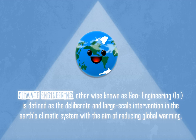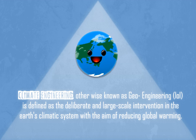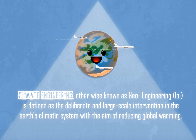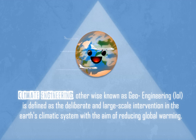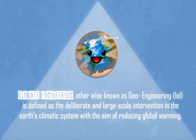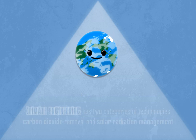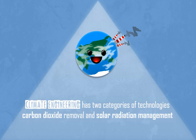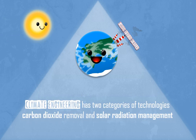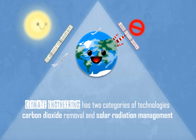Climate engineering, otherwise known as geoengineering, is defined as the deliberate and large-scale intervention in the Earth's climatic system with the aim of reducing global warming. Climate engineering has two categories of technologies: carbon dioxide removal and solar radiation management.